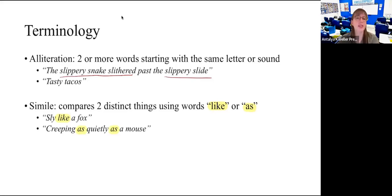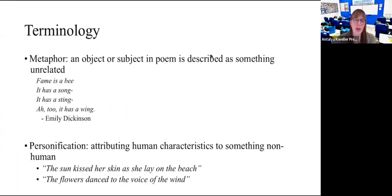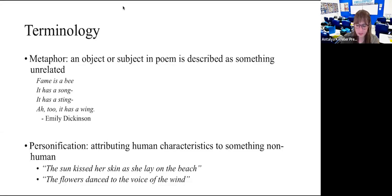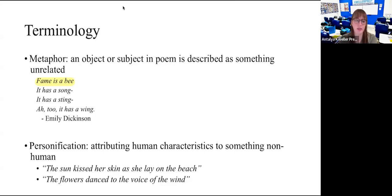Then we have the metaphor. A metaphor is a subject or object in a poem that is described as something unrelated. In this case, 'fame is a bee.' Fame is not literally a bee — it's a comparison, but instead of using words like 'like' or 'as' as in a simile, it's equating fame to the bee.